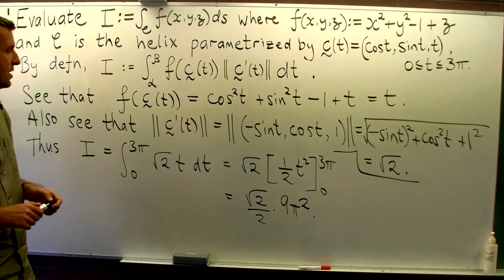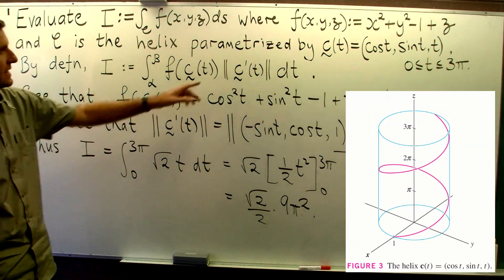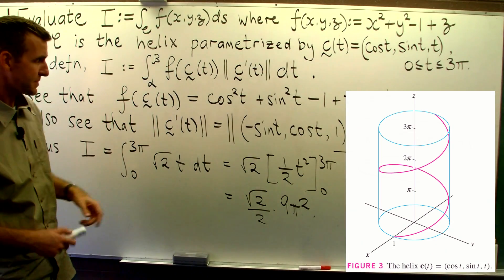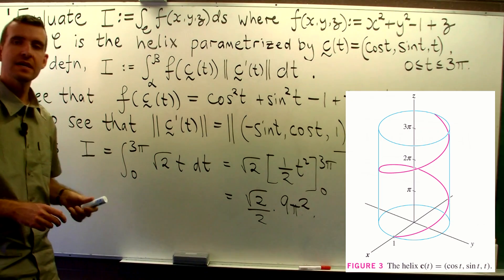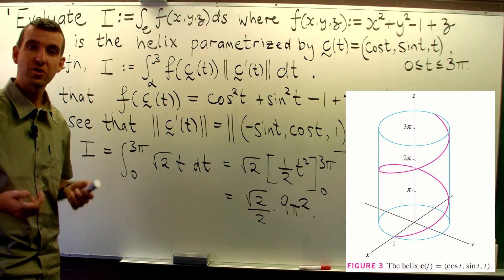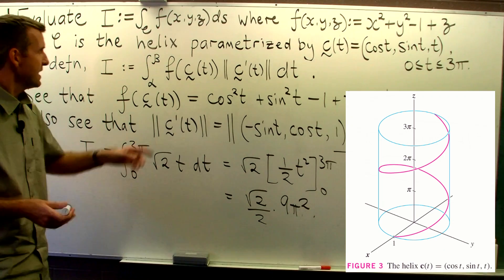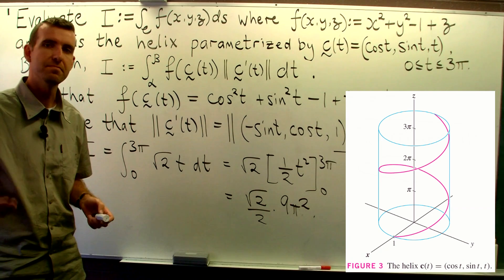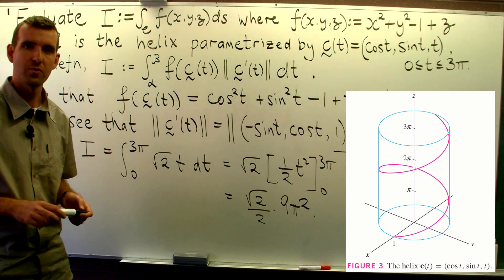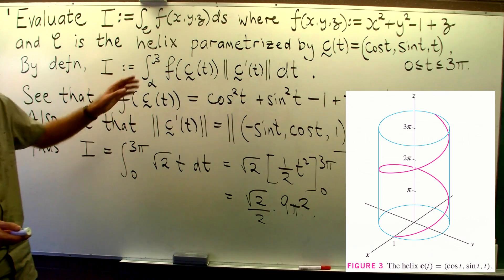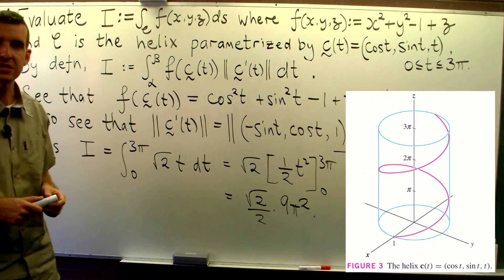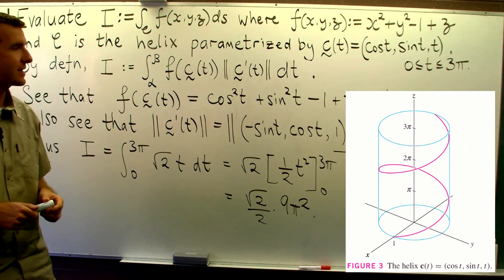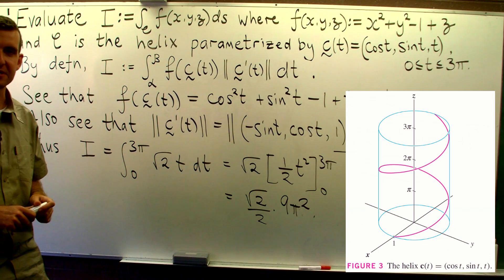Well, as far as applications go, if our f represents a density function and this particular helix is a spring or a coil, then a path integral represents the total mass of the spring or coil. And in this particular case, the density function f would measure mass per unit length. So that's one particular application of path integrals.